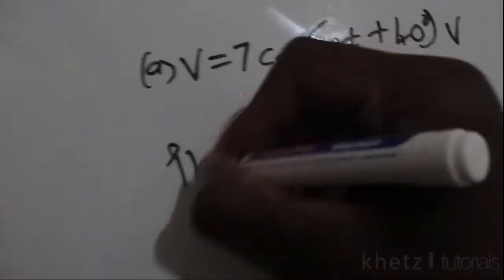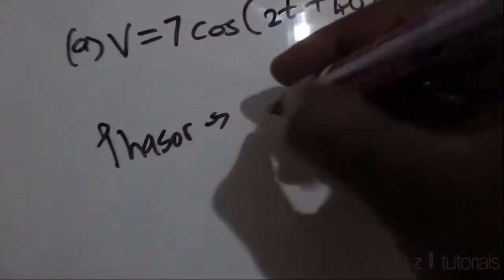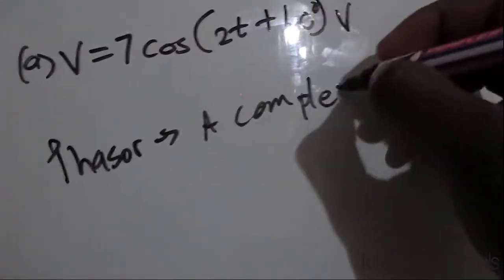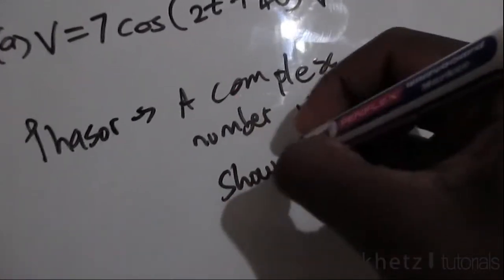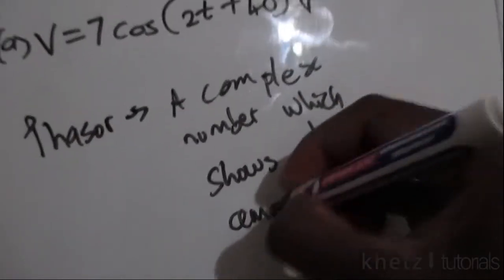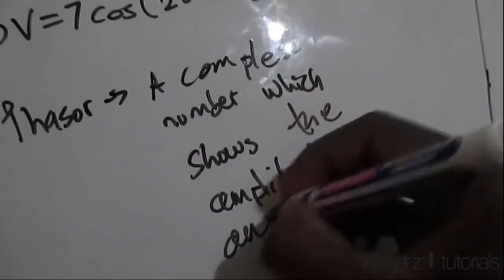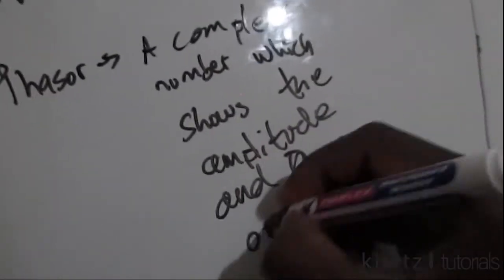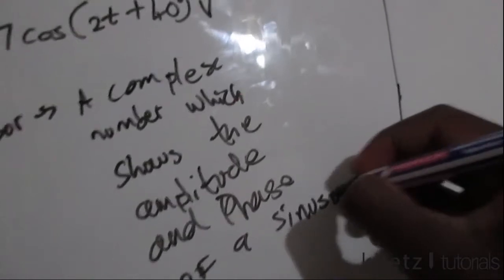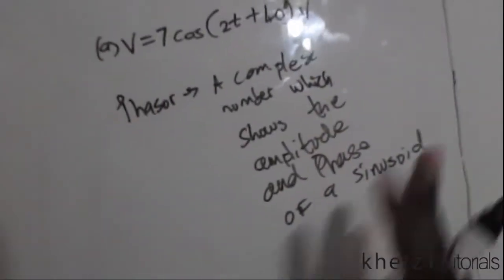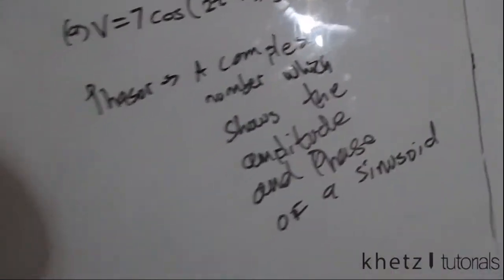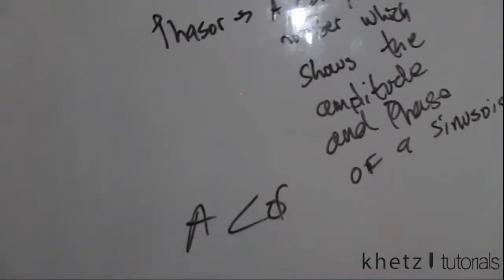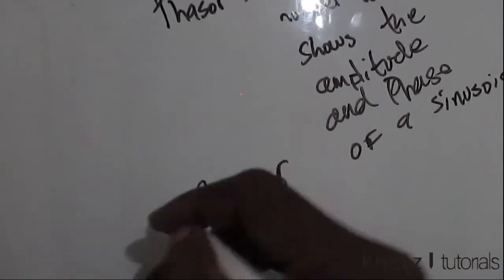Just a reminder, a phasor is a complex number which shows the amplitude and phase of a sinusoid. We are only interested in the amplitude and phase, and this is the basic representation of a phasor.